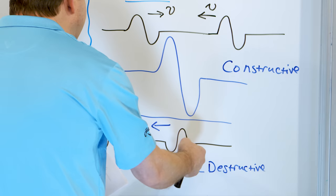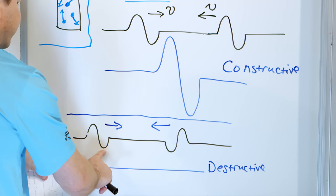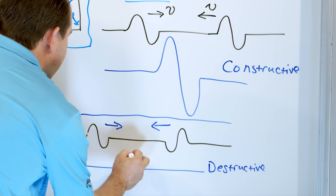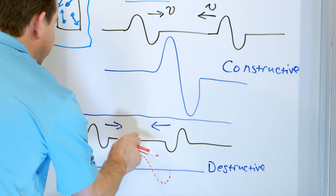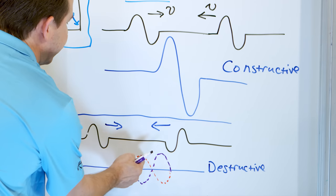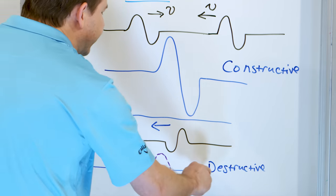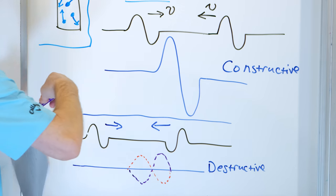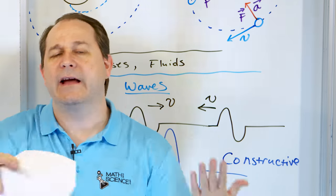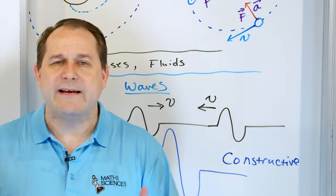We can also have a situation where two waves come together and one is inverted, so the trough hits the crest and vice versa. When you add them up they're basically going to add up to zero - the crest adds with the trough and cancels, giving you nothing. This is called destructive interference. These two waves add the same way but if one is inverted they cancel each other out. This is happening all the time with light waves.